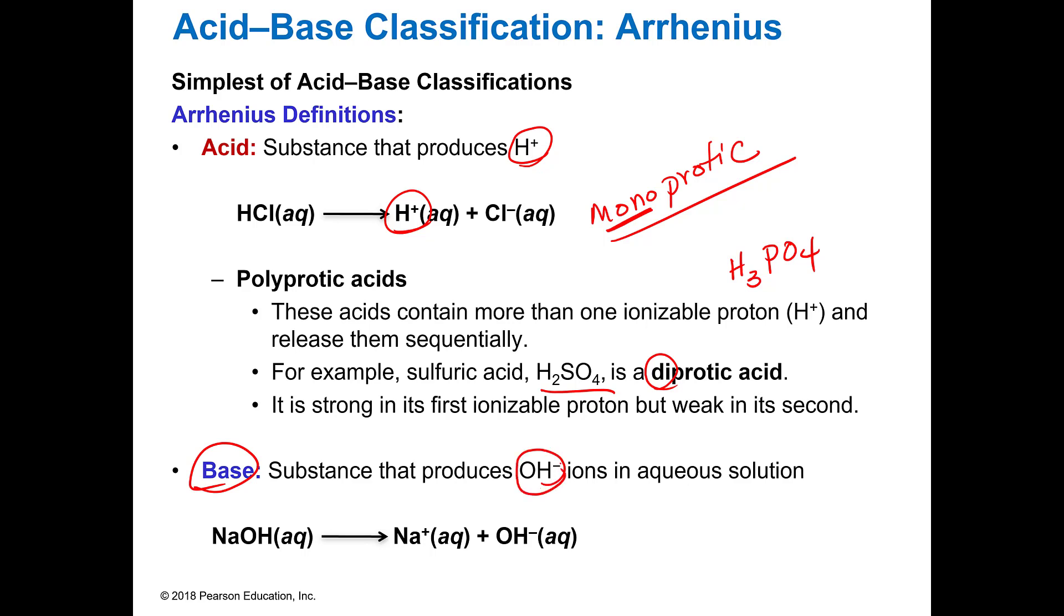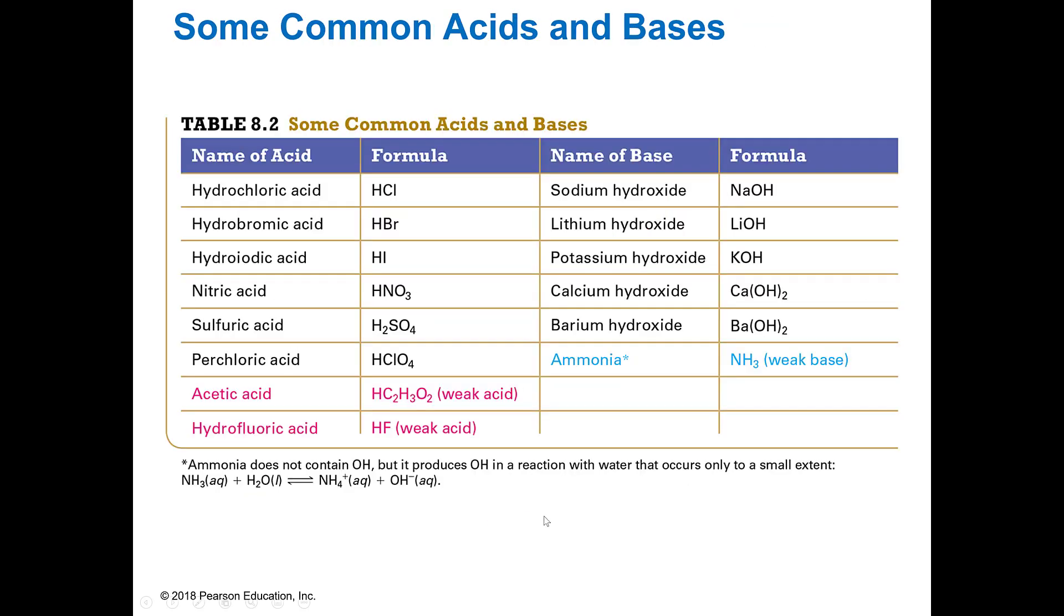A base in the Arrhenius system is something that produces an OH, and so these are your classical bases that have a metal and then an OH and then they will ionize and form the hydroxide ion when you put them in water.